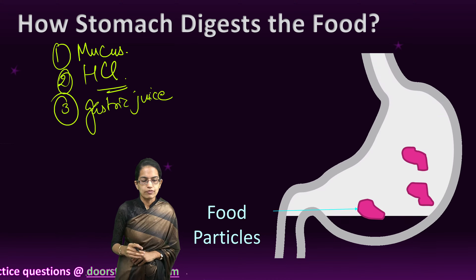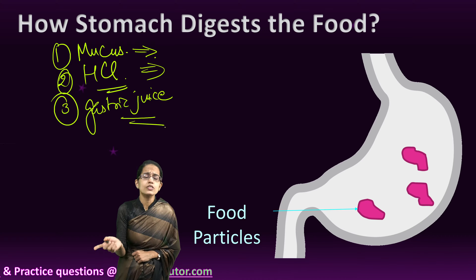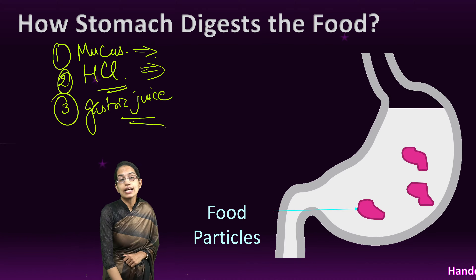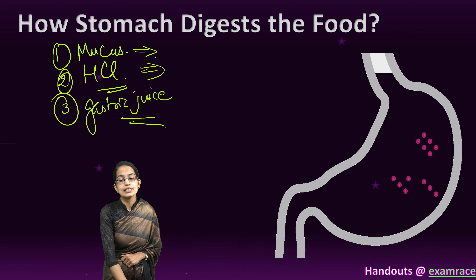Mucus is basically the inner lining of the stomach and it secretes a fluid called mucus. The secretion is seen in the neck glands of the mucus. HCl, which is hydrochloric acid, is importantly used to kill the bacteria in the stomach, and it also helps the digestive juice — the gastric juice — to act.